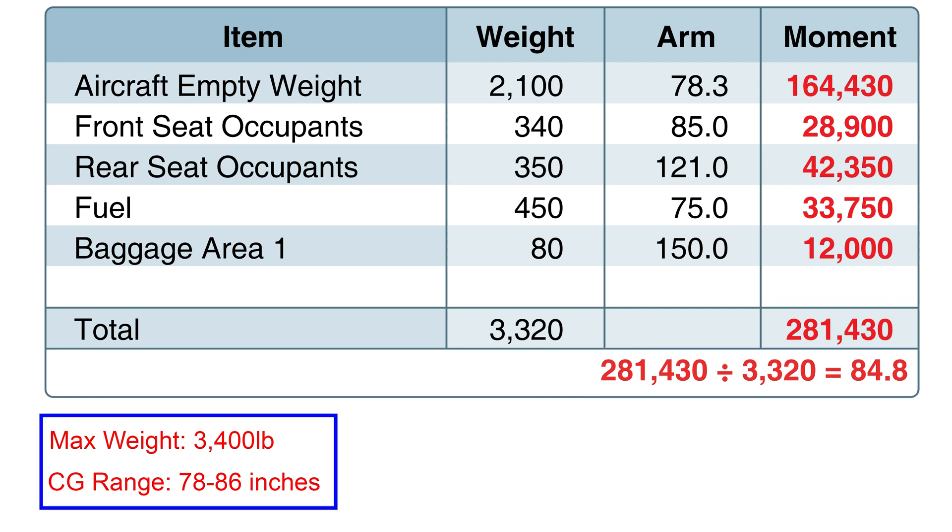Suppose the manufacturer specified the aircraft's maximum weight of 3,400 pounds. Also, the allowed distance range for the center of gravity from the datum is 78 to 86 inches. In our case, the launch weight and the center of gravity meet the manufacturer's guidelines. If not, the aircraft can be unstable and uncontrollable under certain circumstances.